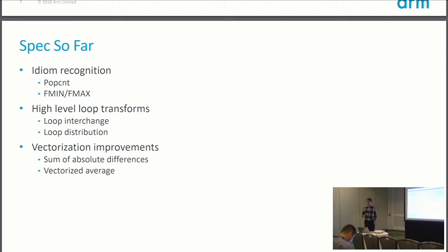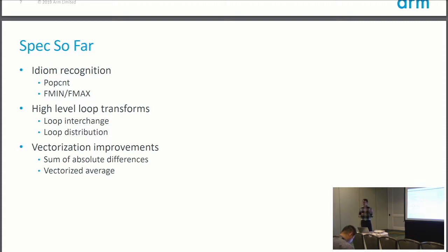This is the kind of work we've been doing on SPEC over the last couple of years — not heroic optimizations, but pretty good ones, meaning 20-30% on the benchmarks that they matter for. Things like idiom recognition — looking through source code to find whether some jumble of bit operations maps to something like a popcount, or whether a loop looks like a floating-point min or max so we can emit those instructions. The high-level loop transforms — loop interchange and loop distribution — were both very good for our SPEC 2006 and 2017 scores. We've also been looking at vectorization improvements.